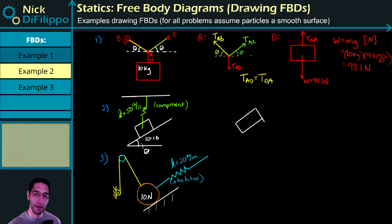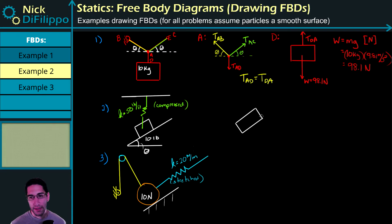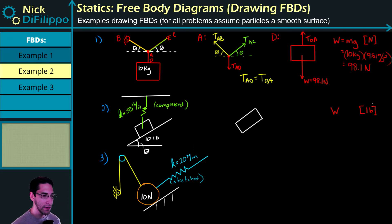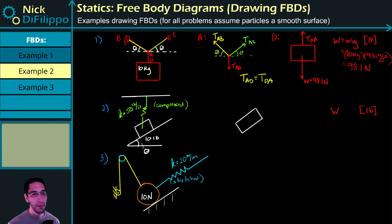First thing I notice is that I have a weight. I need to be careful here — the weight is given in pounds, which means I'm working in English units and it needs to be in pounds. So I don't need to do anything with this weight. Don't multiply it by 32.2 and don't multiply it by 9.81 by mistake. If it's in pounds it's already set, and we know that weight always points directly down.